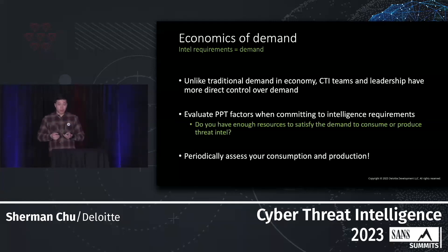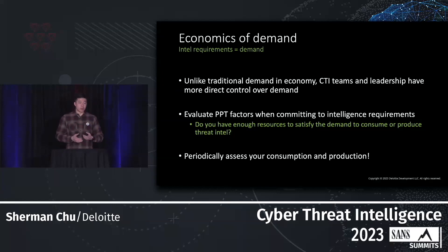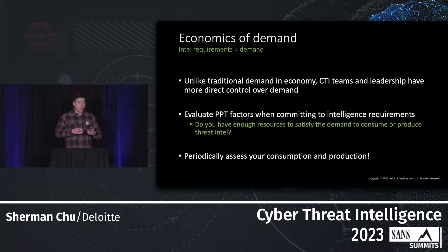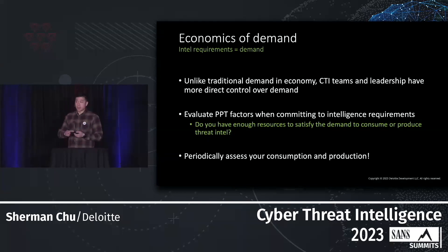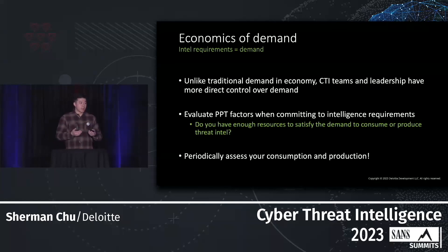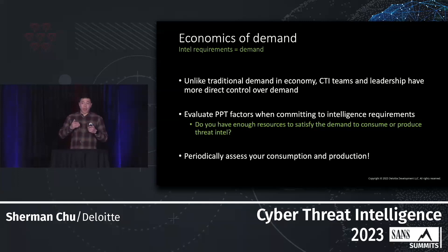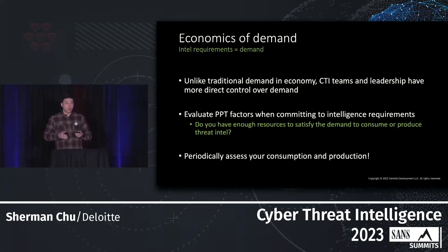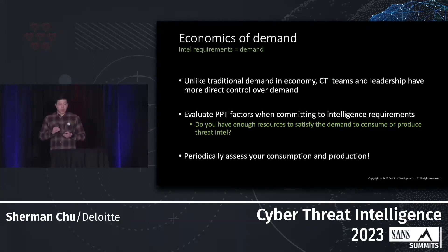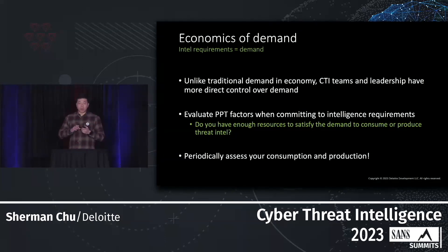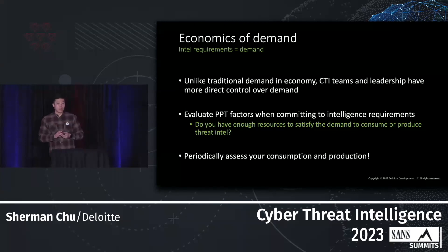We should also periodically assess our consumption and production — generally on an annual or recurring basis. What are you producing? What are you consuming? Do you have enough people to commit to all these demands? It's critical because we often contractually agree to demands we want to achieve rather than what we can achieve. Always start with what you can achieve based on actual resources, then plan forward. CTI operations do not happen in a vacuum — they require time, financial resources, and people.